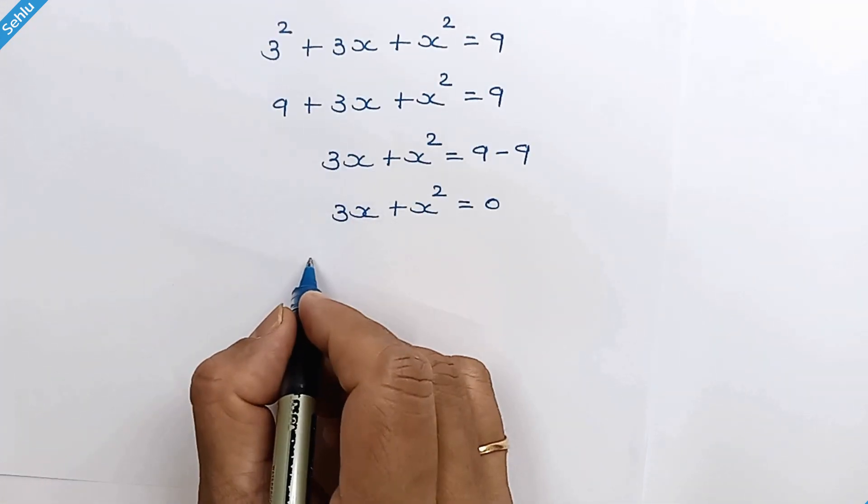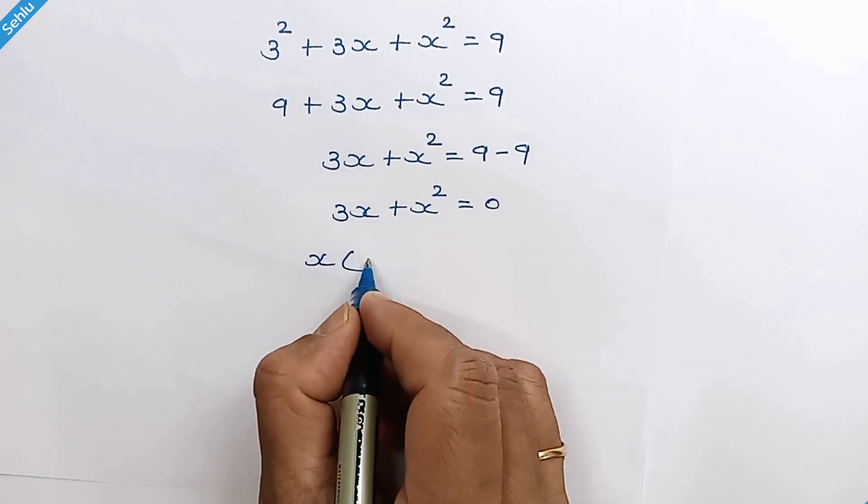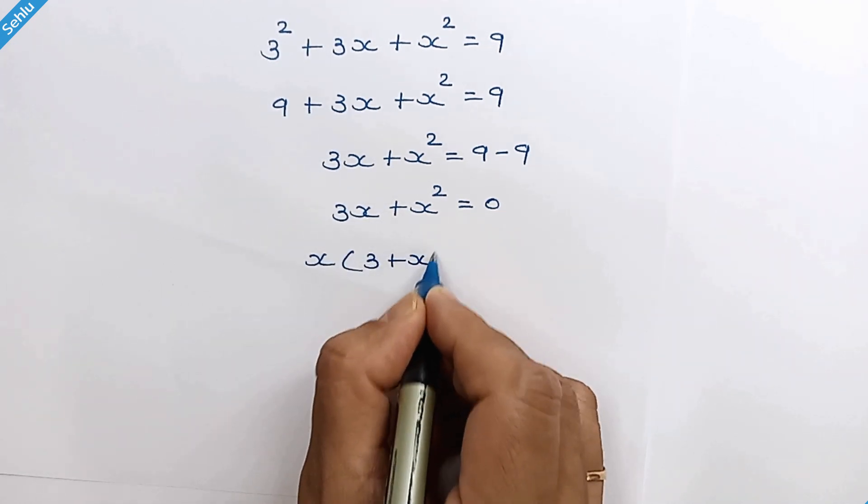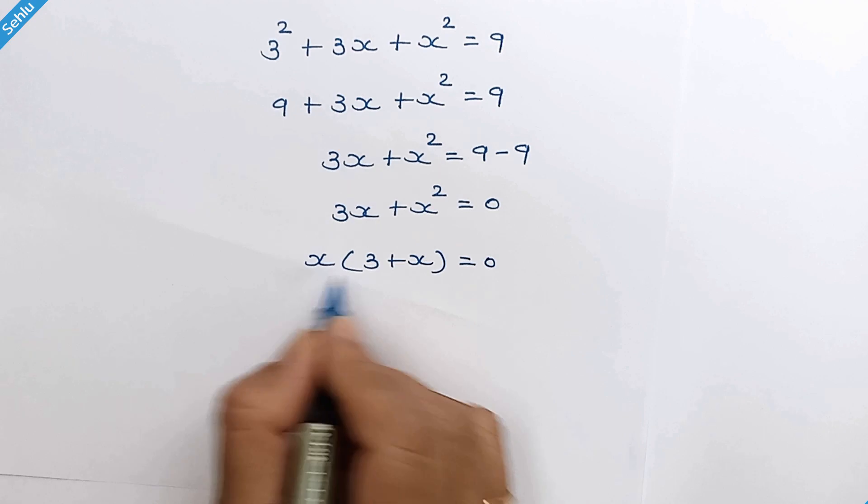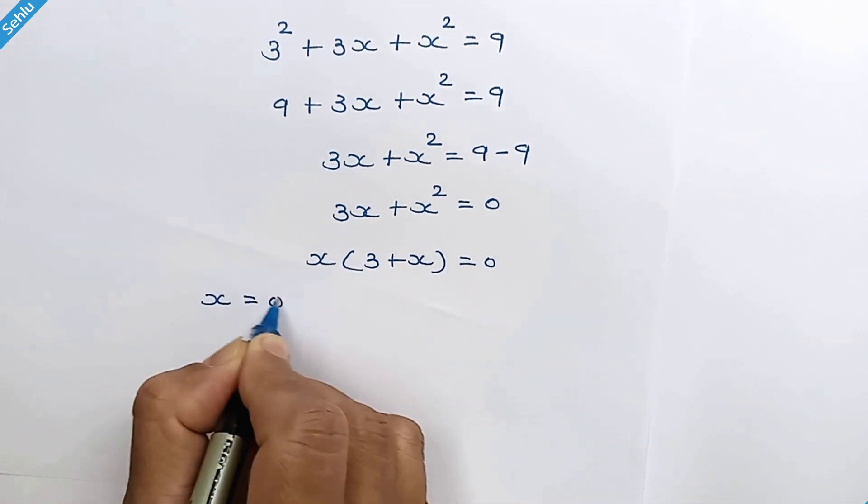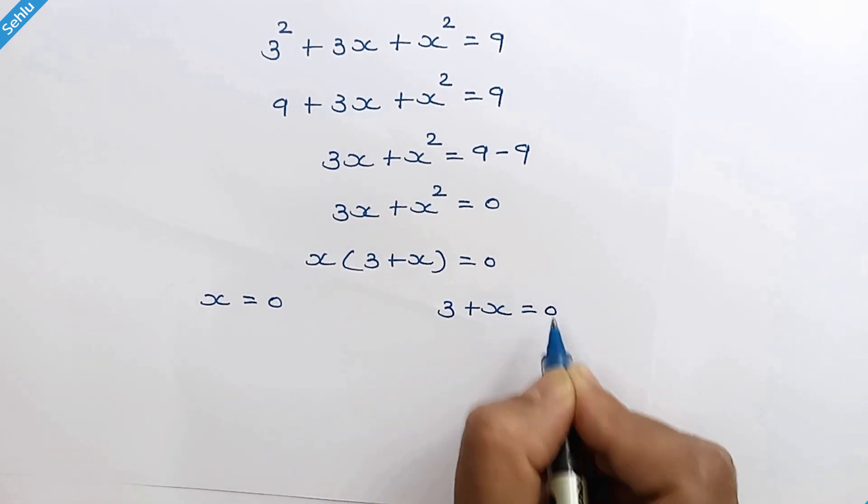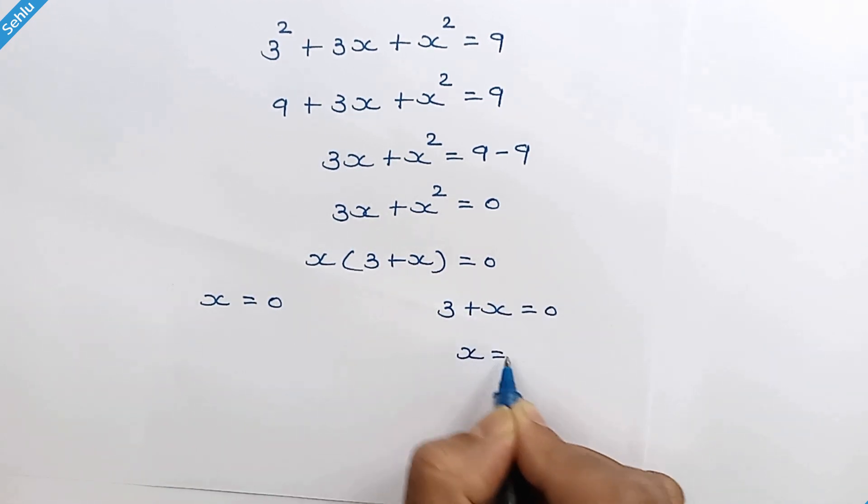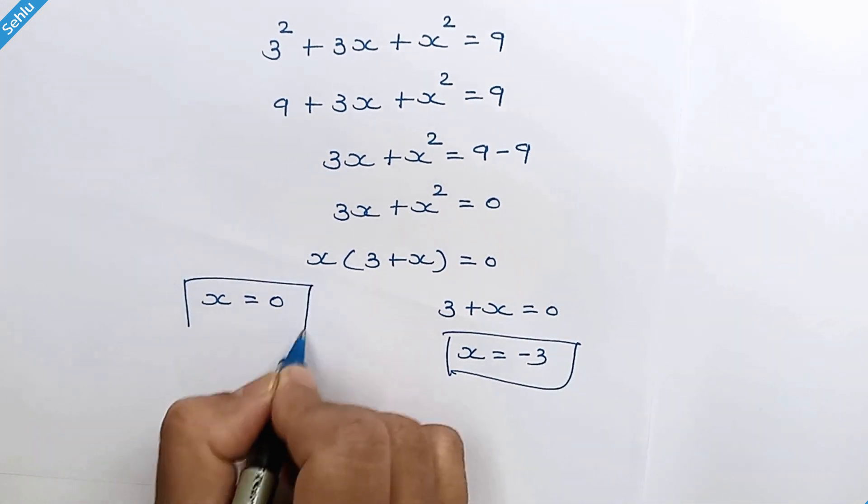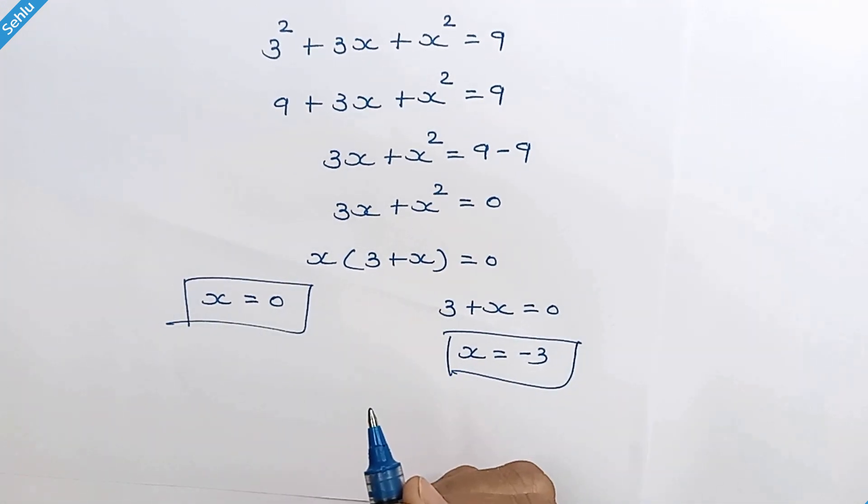Now we can factor out x. This means x equals 0 and 3 plus x equals 0. So here we have x equals negative 3. So we have the values of x.